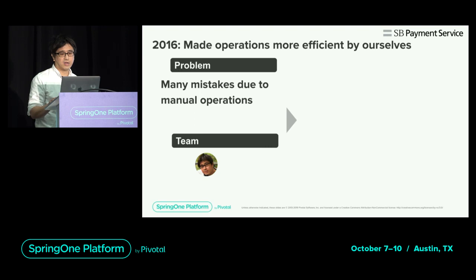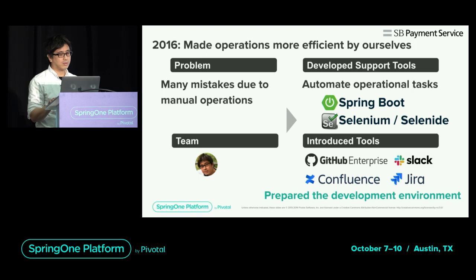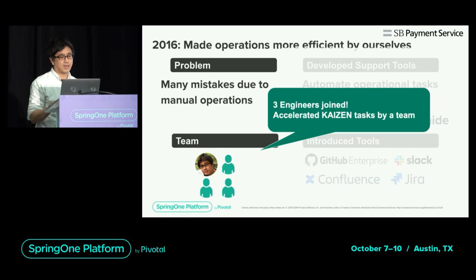We automated the operations that created in-house support tooling. We also introduced tools needed for development such as GitHub, Slack, Confluence, and Jira. At the same time, three engineers joined and we accelerated Kaizen tasks as a team.